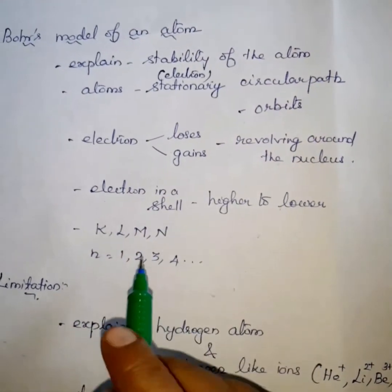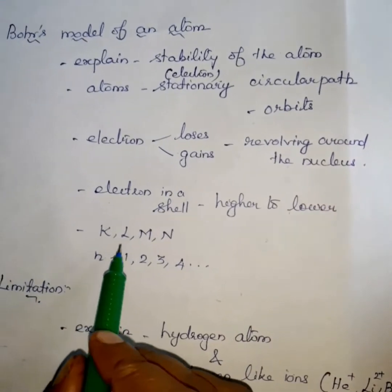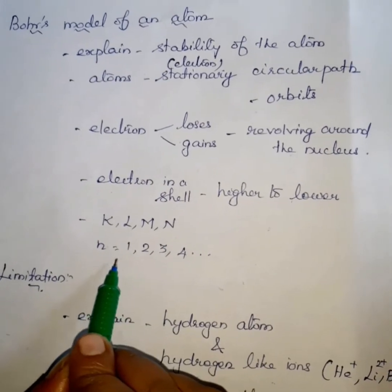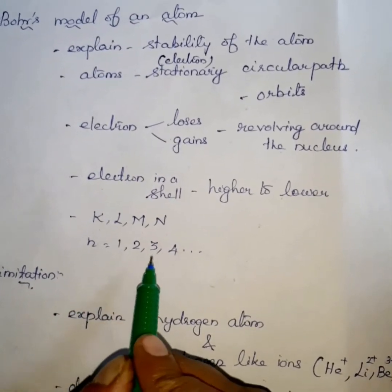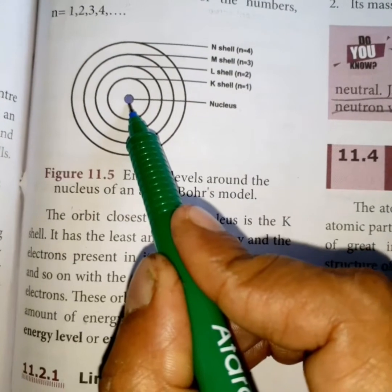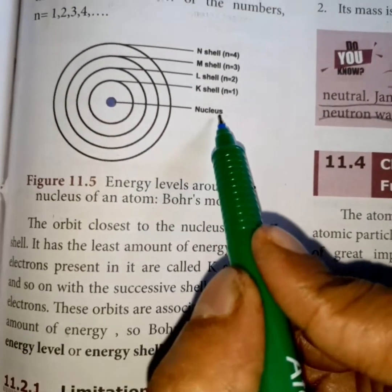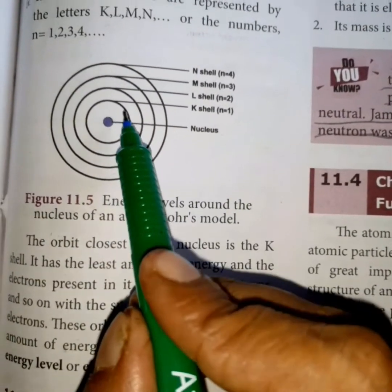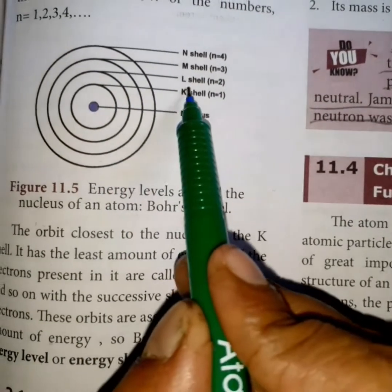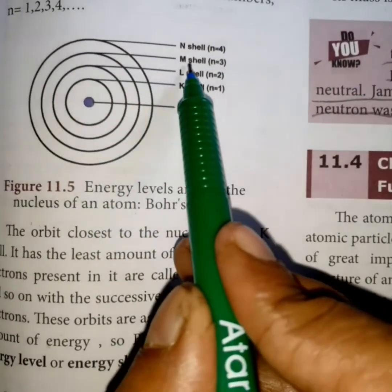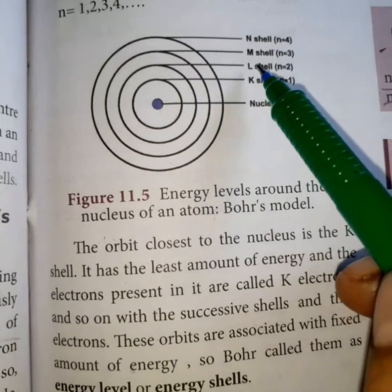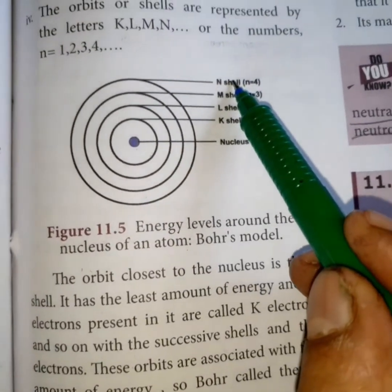The orbits or shells are represented by the letters K, L, M, N, or by the numbers n = 1, 2, 3, 4. Now see the Bohr model. The center part is the nucleus. The first shell is the K shell, the second shell is the L shell, the third is M shell, and the fourth is N shell. K, L, M, N are called the primary shells.